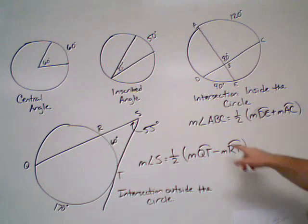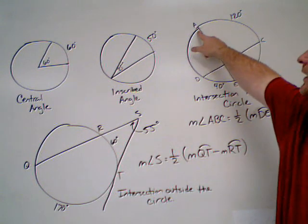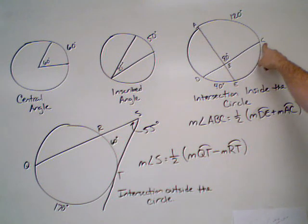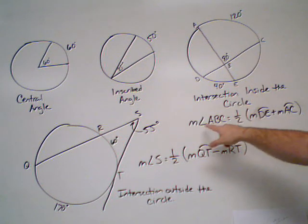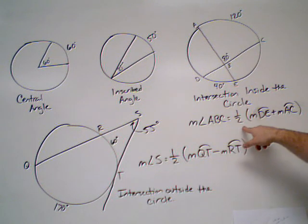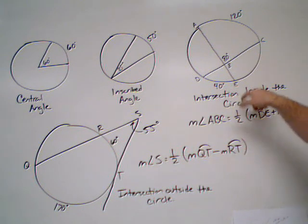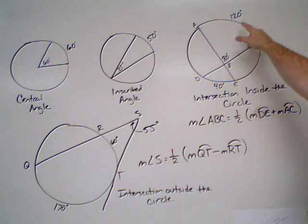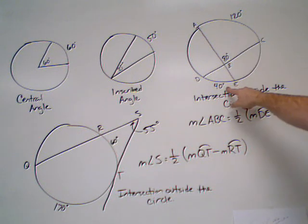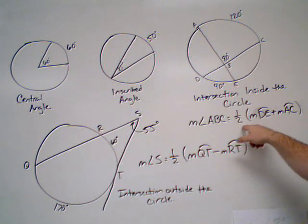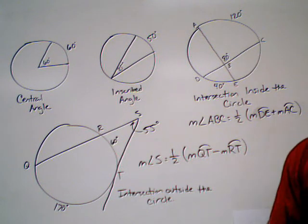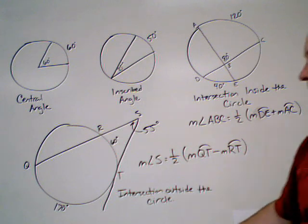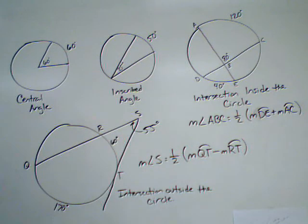Here's the formula: if I'm looking for the measure of angle ABC, I take one half the sum of arc AC and arc DE. So I have 120 plus 40, which gives me 160. Divide that by two and I get 80 degrees. The fourth one is where I have an intersection outside the circle.